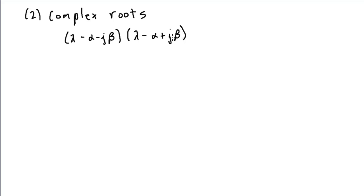And the corresponding roots, when I set this equal to 0 and solve for the lambda value, I'll get lambda values at alpha plus j beta and lambda equal to alpha minus j beta.